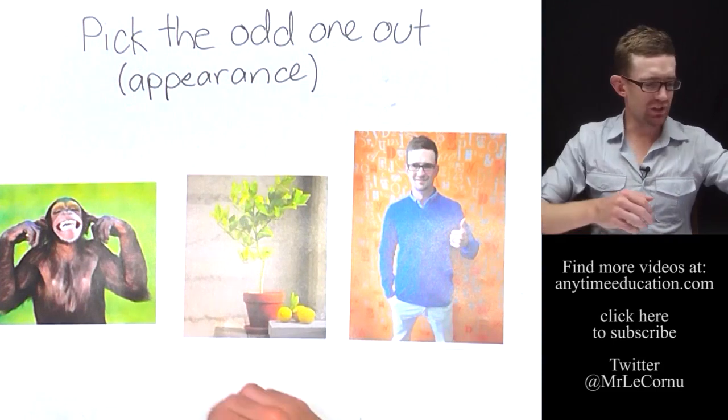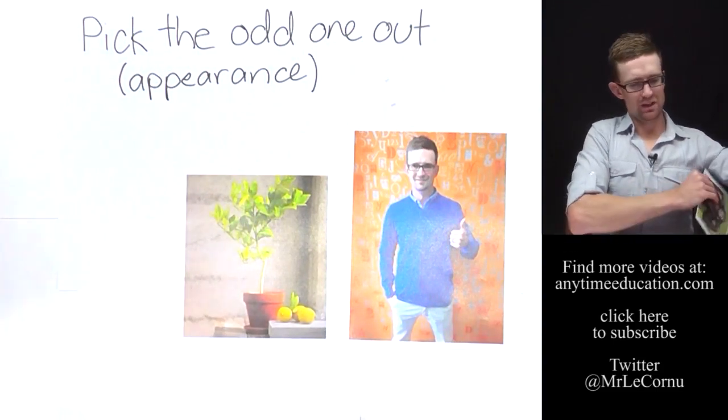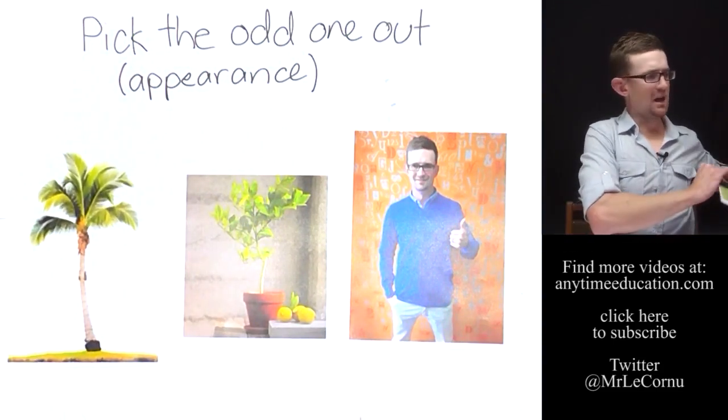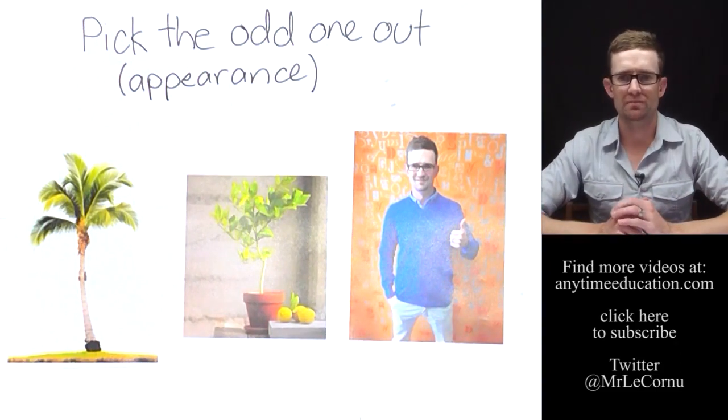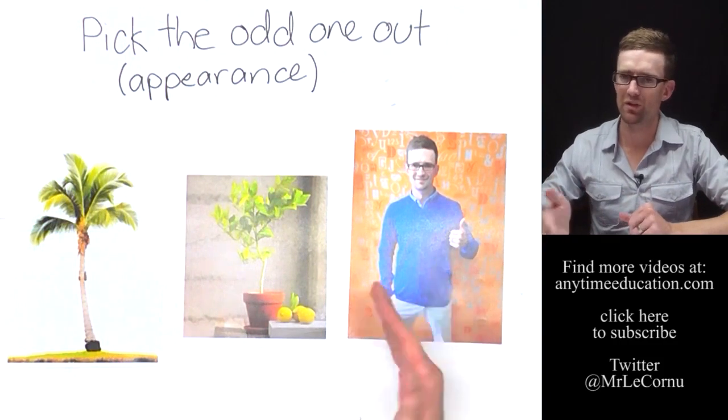Alright, what if we change it around, get rid of chimpanzee, bring in palm tree? Palm tree, lemon tree, human. Now it would be human, correct?